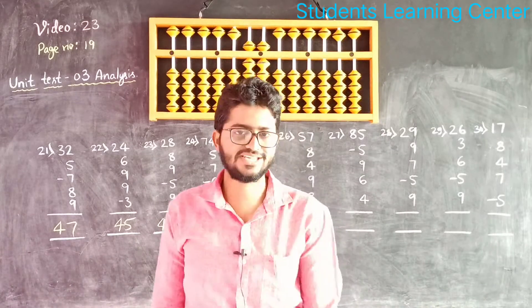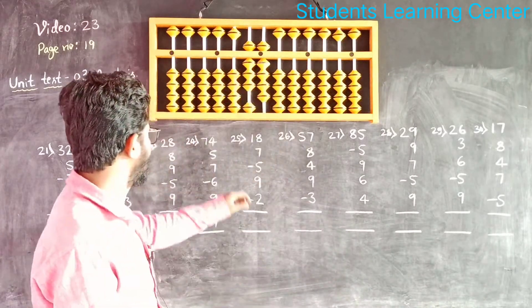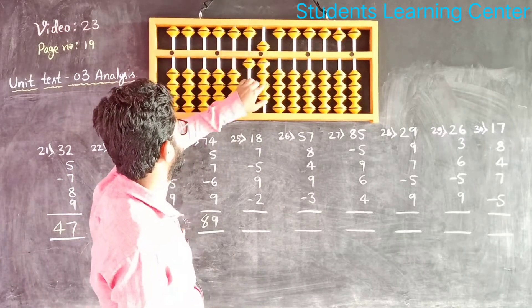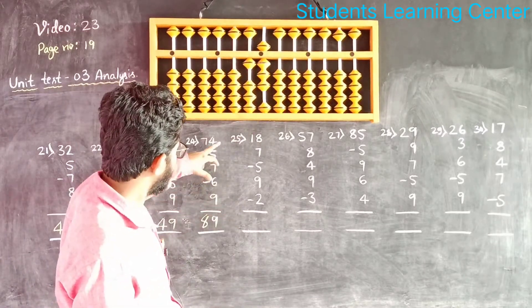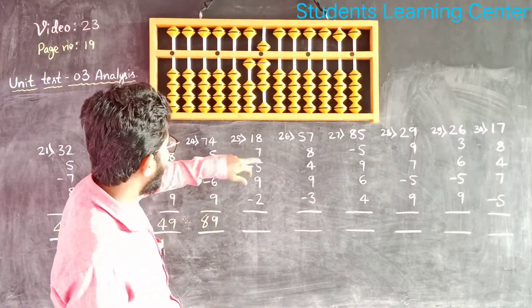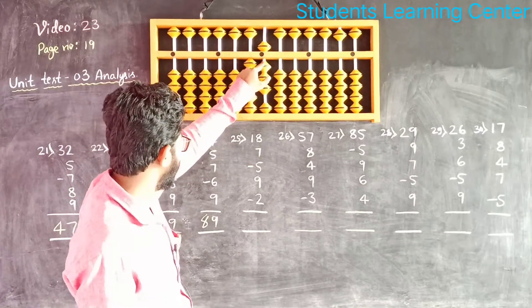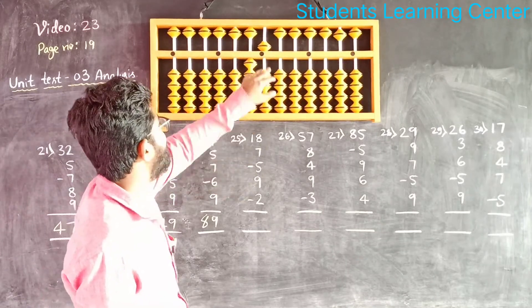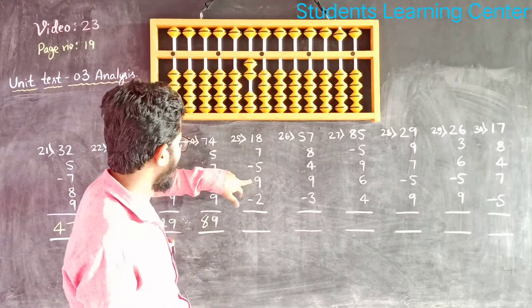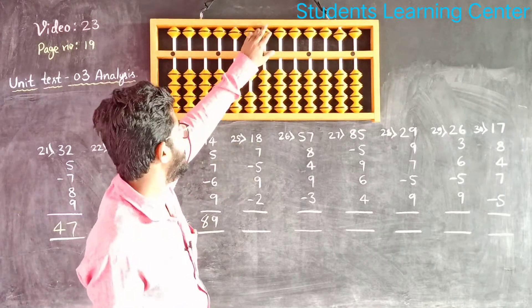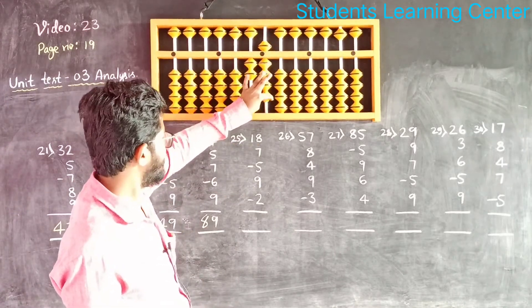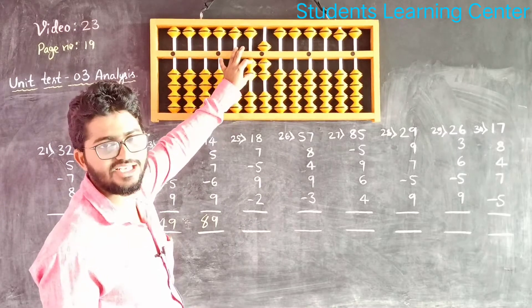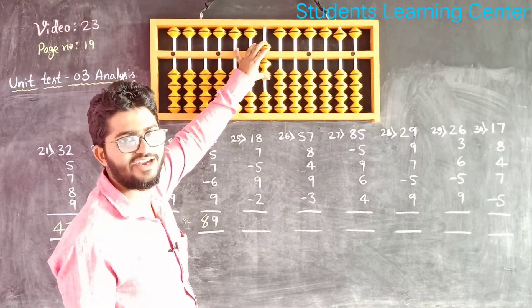Next question. Add 18, add 7, add 10 less 3, less 5. Add 9, then less 2. Answer is 27.